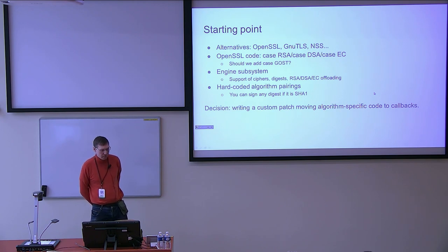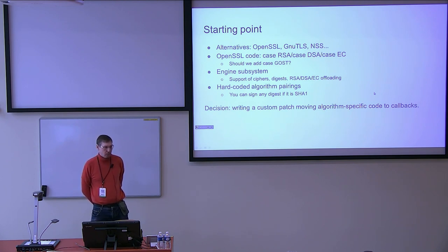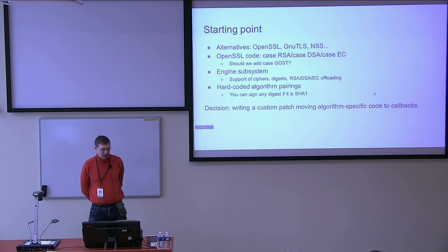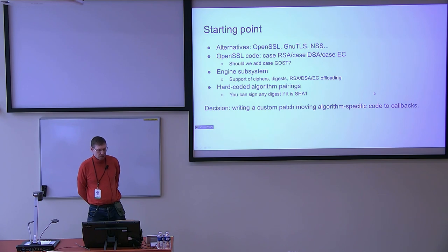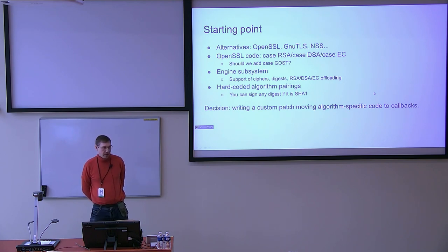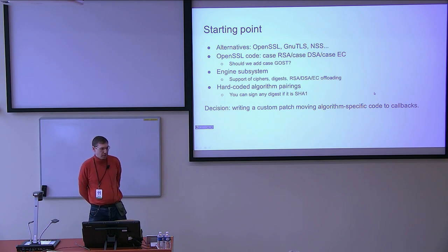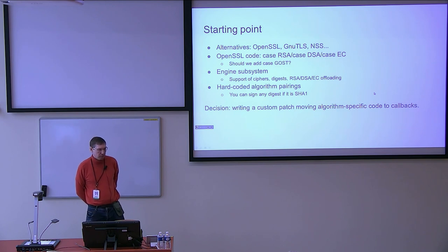The first thing we saw in the code was many case-switch statements in the parts related to digital signatures — case RSA do this, case DSA do that — and sometimes cases for elliptic curve cryptography. We thought about whether we should add a case for GOST, but decided not to, and took a closer look at the engine subsystem. It was a way to provide plugins that could carry implementations of ciphers, message digests, or custom hardware-offloaded implementations of worldwide algorithms and random number generation.